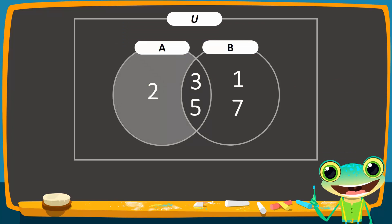Since elements 3 and 5 are also in set B, we do not shade that region. To verify the shading, we can simply work out A difference B, which gives the singleton set containing 2. Therefore, when sets A and B are overlapping, A difference B is represented by shading the region that contains elements belonging only to set A.